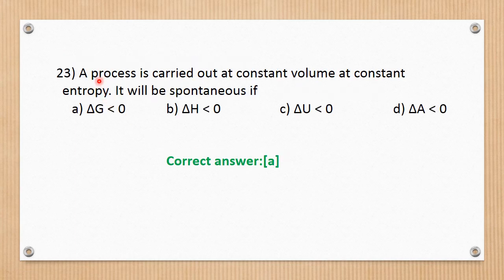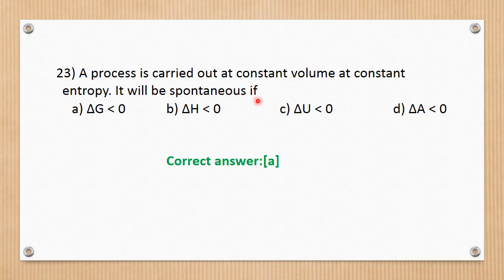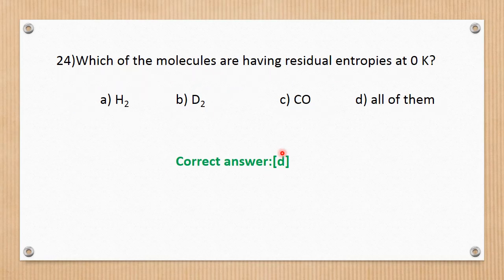Question number 23. A process carried out at constant volume and constant entropy will be spontaneous if certain conditions are met. The correct answer for this question is A.